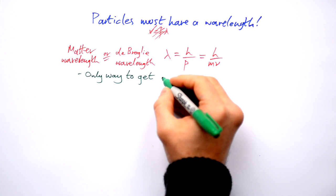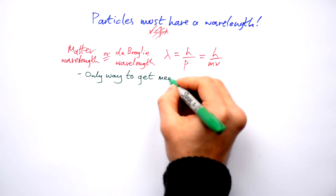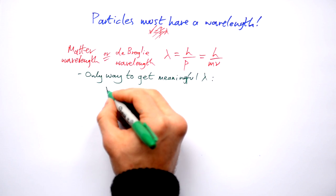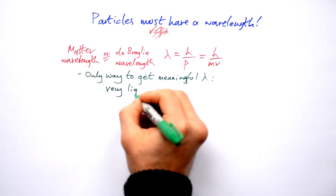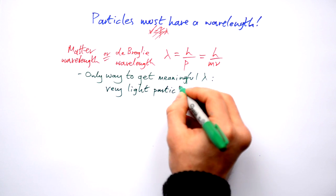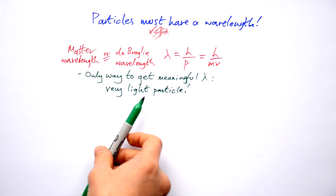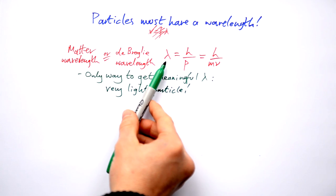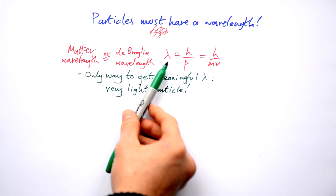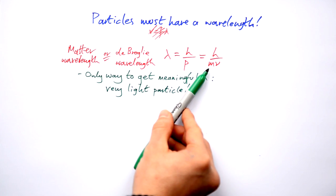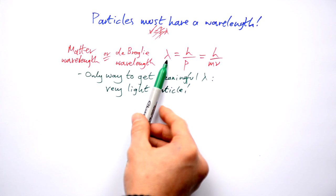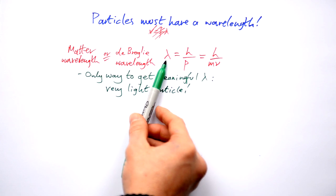The only way to get a meaningful wavelength is with a very light particle. So that's why we see diffraction with electrons but don't see it with bigger particles. Technically even you have a de Broglie wavelength but you have such a massive mass that the wavelength ends up being so small you basically don't diffract at all. But theoretically you walk through a doorway and you are going to diffract a tiny bit.